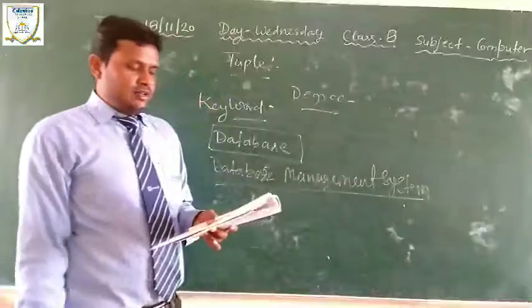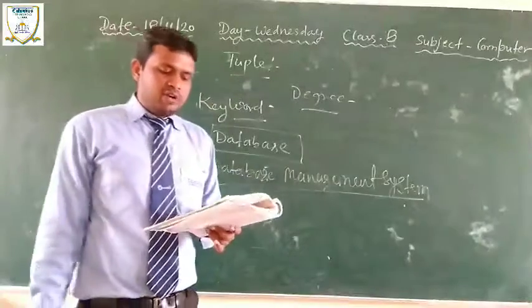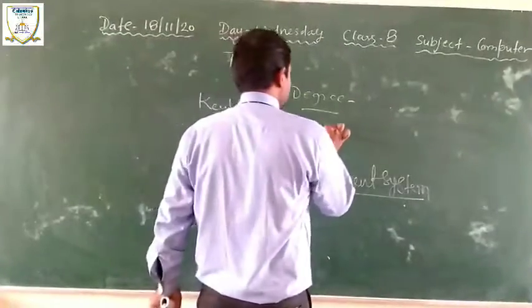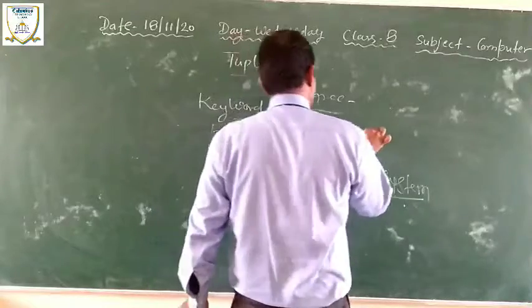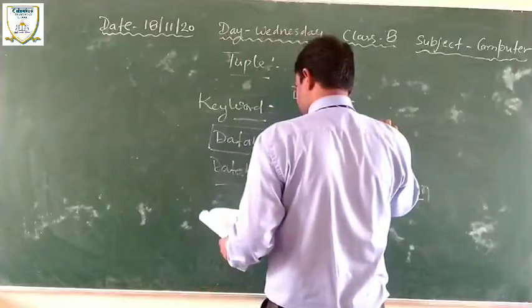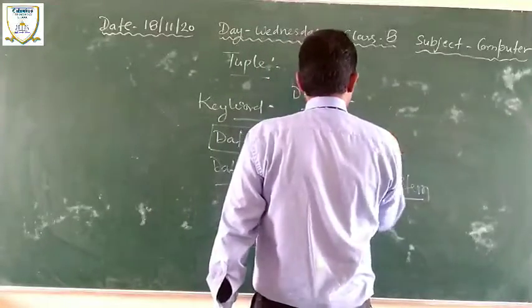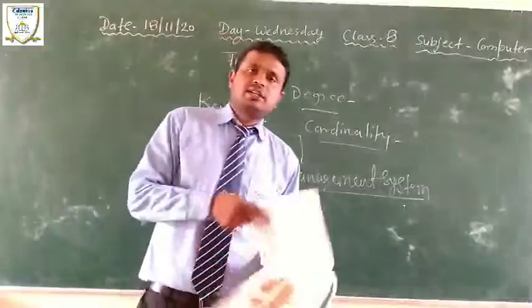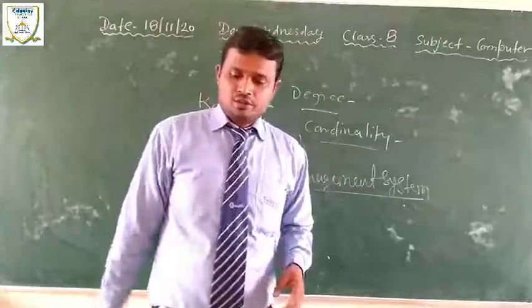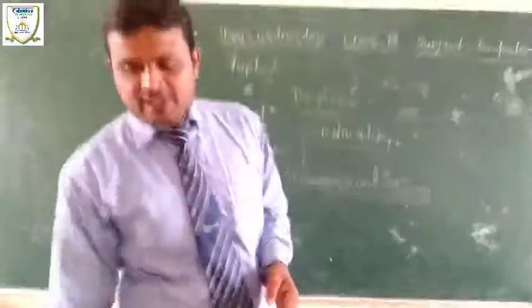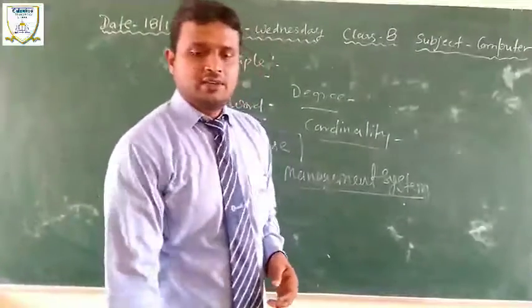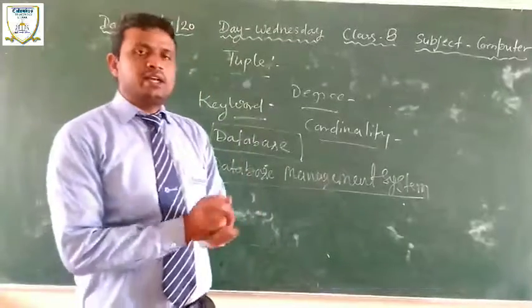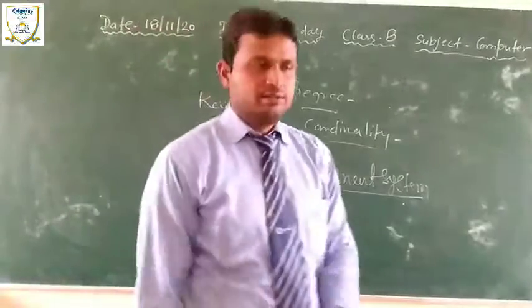Degree: the number of columns in a table. Cardinality: the number of rows in a table. So you have to revise it. Tomorrow I will take the answers to these questions. You have to just prepare it. Thank you, have a nice day.